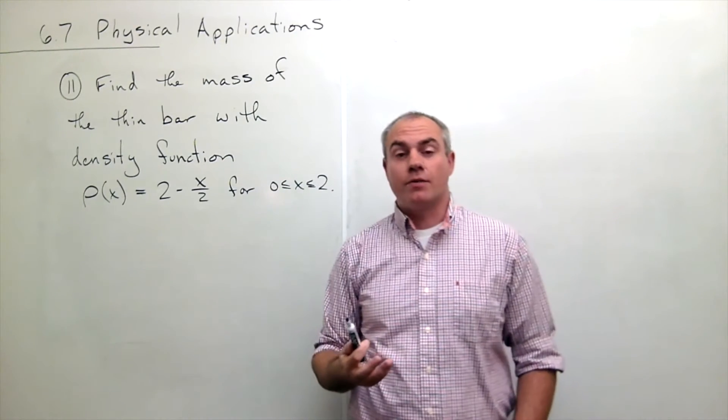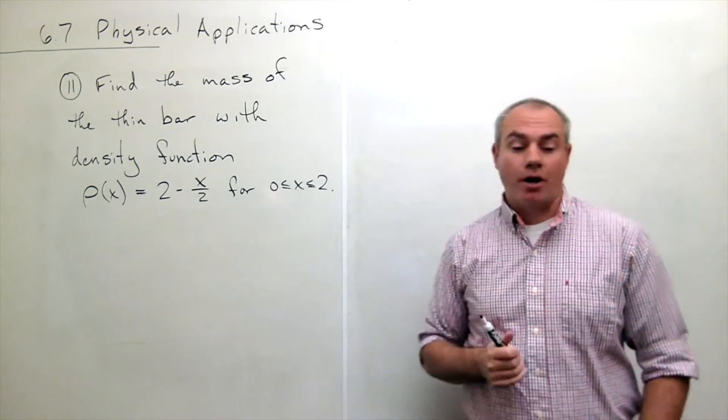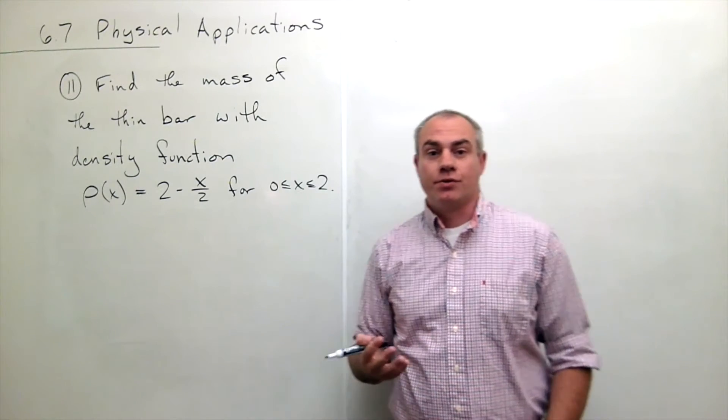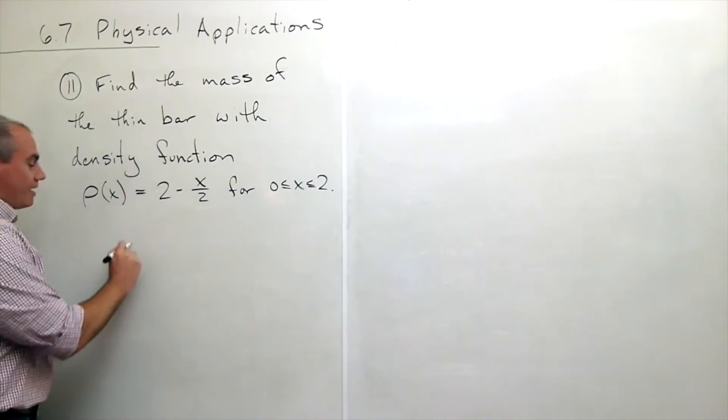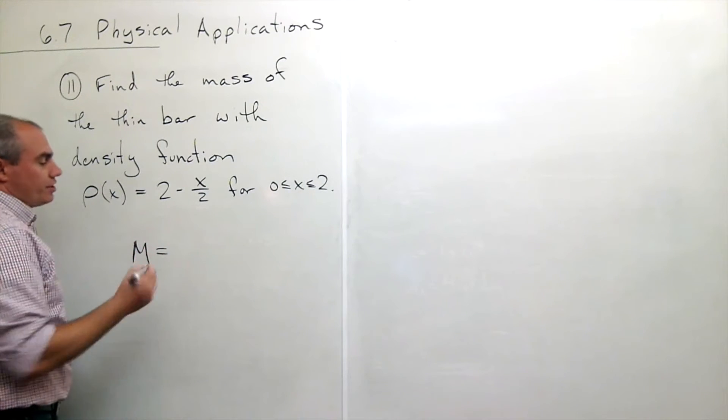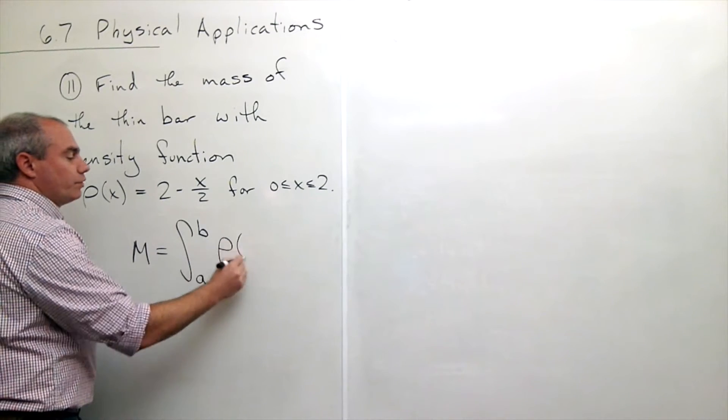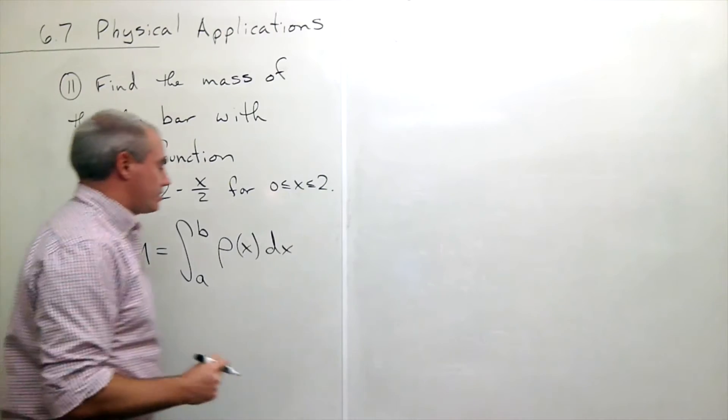The first thing that we need to know in these thin bar problems is what is our actual integral to find mass. In this case, the mass equation is quite easy. It's just the integral from a to b of the actual density function ρ(x) dx.